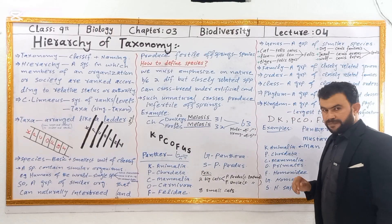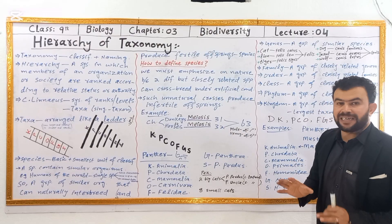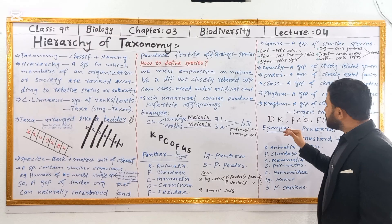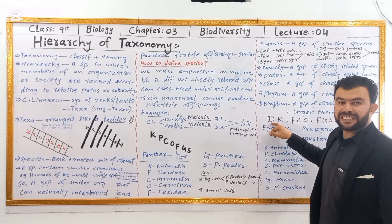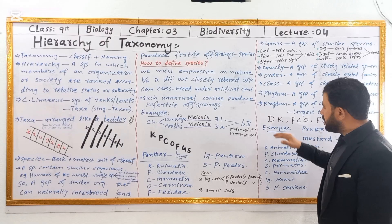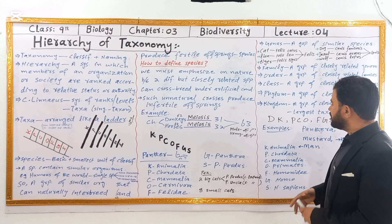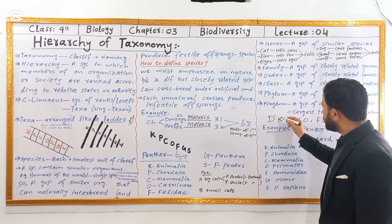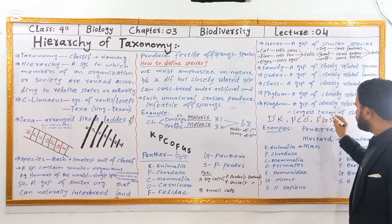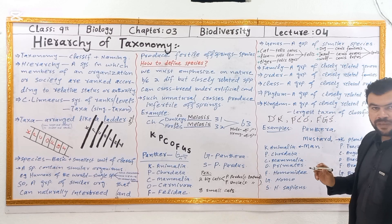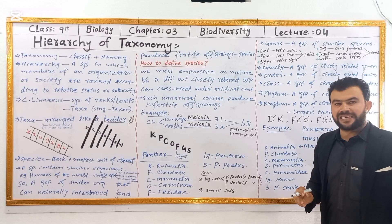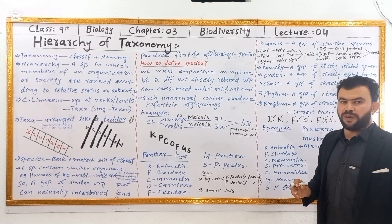In modern classification, the taxonomic hierarchy includes the domain. The mnemonic is D-K-P-C-O-F-G-S: domain, kingdom, phylum, class, order, family, genus, species. This is the domain name used in modern taxonomy.